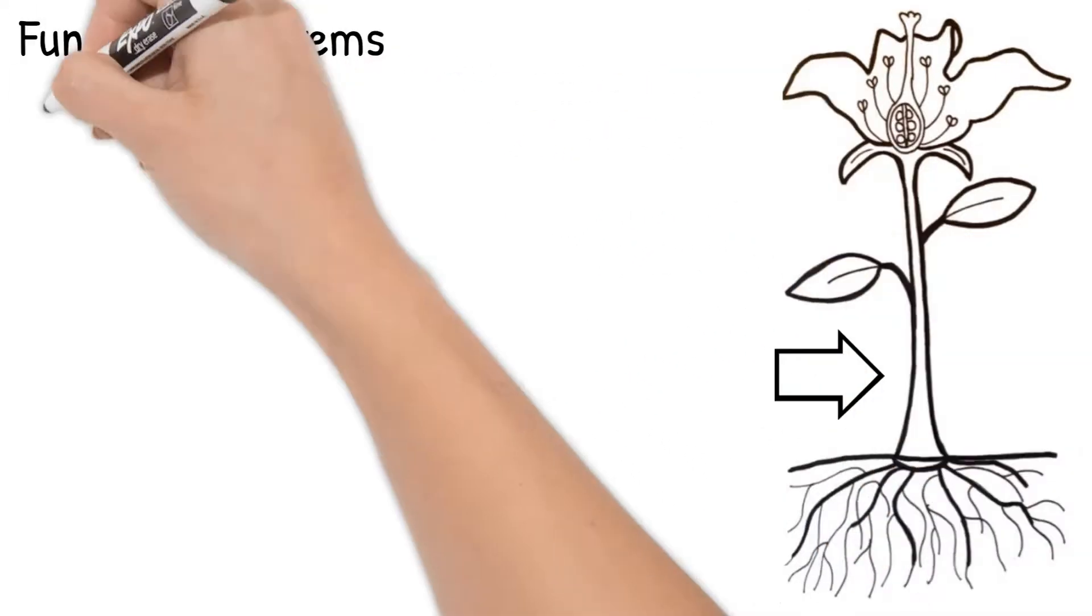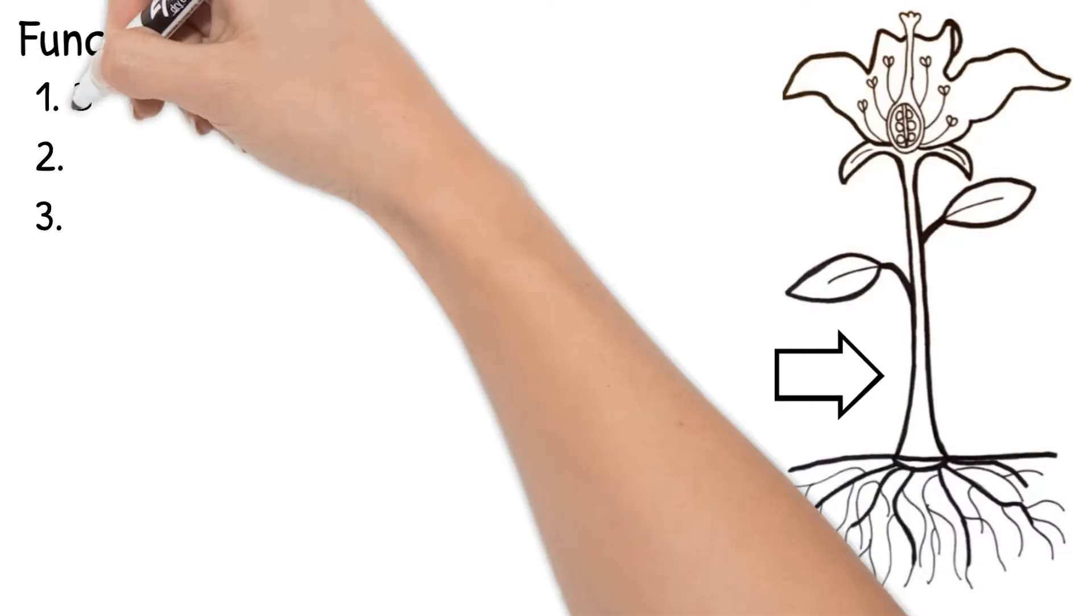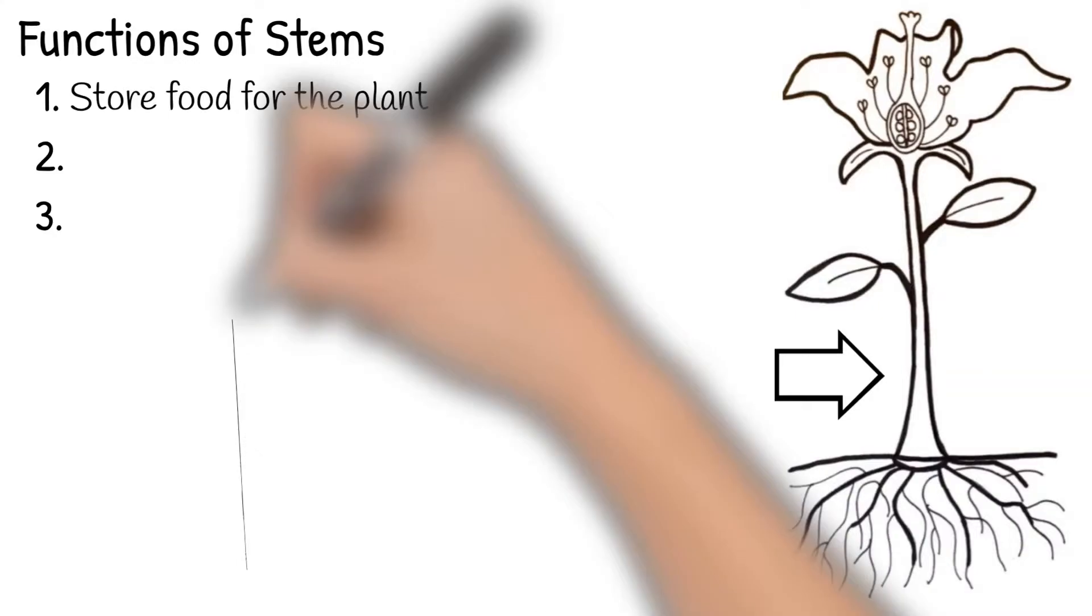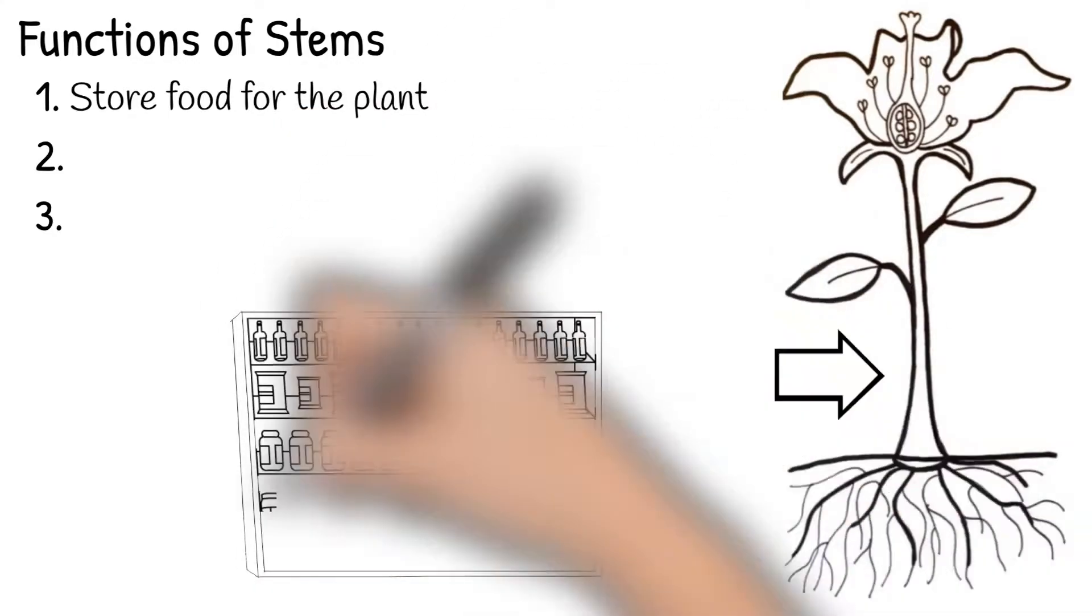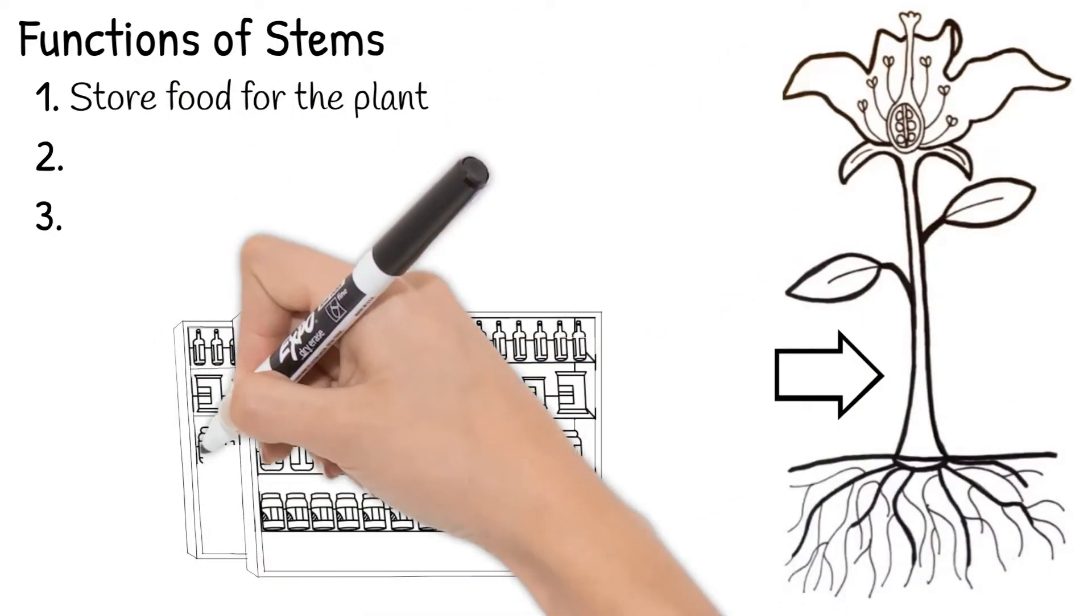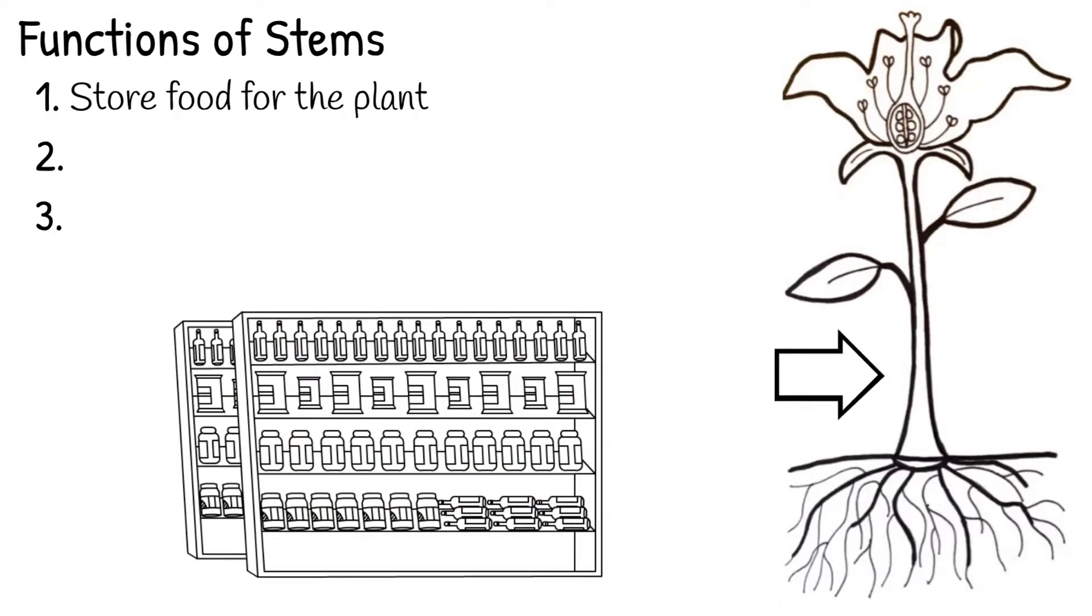Stems have three functions. They store food for the plant, same as the roots do. This food storage in the stem and roots help plants make it through when harsh conditions arise.